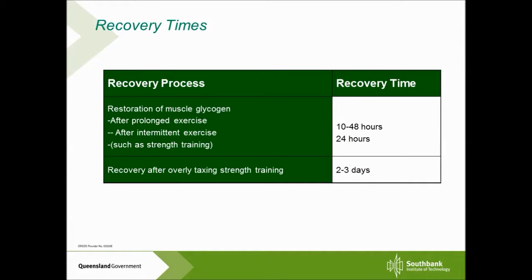When looking at how long recovery should actually take, the first consideration is restoration of muscle glycogen, which generally refers more to cardiovascular-type exercise. Recovery time varies between 10 to 48 hours. For low to moderate intensity training, recovery time is somewhere between 10 to 15 hours for muscle glycogen to be restored. For higher intensity training sessions, it may be somewhere between 36 to 48 hours. The fitter you are, the quicker your muscle glycogen will restore. Food intake around your training session also plays a role — generally the best time to restore muscle glycogen is immediately post-exercise.